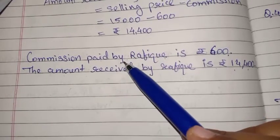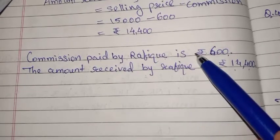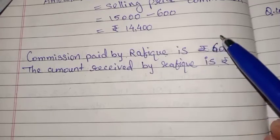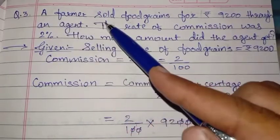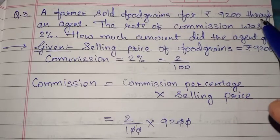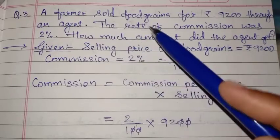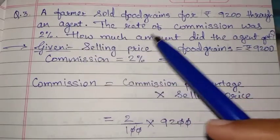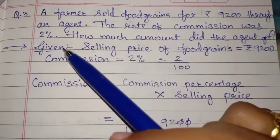Since this is a word problem, always write the final answer as a complete sentence. Therefore commission paid by Rafik is rupees 600 and the amount received by Rafik is rupees 14,400. This is very important.